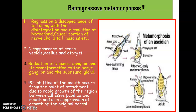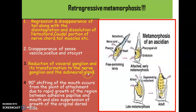What happens is that the nerve cord becomes degenerated, then the tail portion of the nerve cord becomes degenerated, and the tail muscles present in the tail also disappear. The second change is the disappearance of the sense vesicle, ocellus and otolith — all these sensory organs present in the larva disappear. Then the third change is the replacement of the visceral ganglion present in the larval stage by the nerve ganglion as well as the subneural plate. The last change is that there occurs a 90-degree shifting of the mouth with the point of attachment due to the rapid growth of the region between the adhesive papillae and the mouth. Due to the enlargement of these structures, there occurs a shifting of the mouth region.